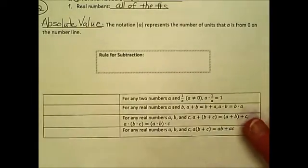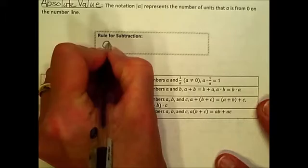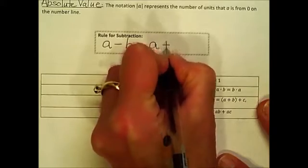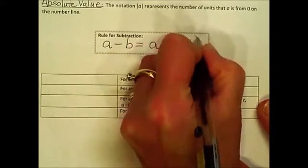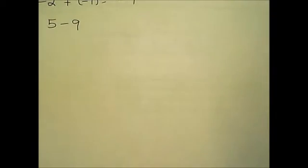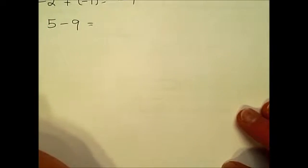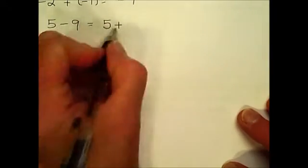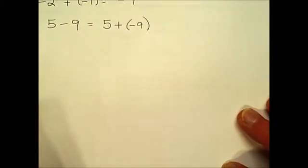Back to our notes sheet, we have a rule for subtraction. This is actually what your calculator does when you hit the subtraction button: it changes subtraction into addition of the opposite of what you were subtracting. Let's look at a couple of examples of subtraction. If you have five minus nine, you may be able to answer that because you've dealt with problems like this, and using your calculator should obviously give you a correct answer.